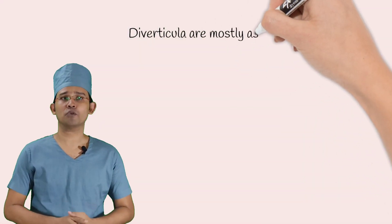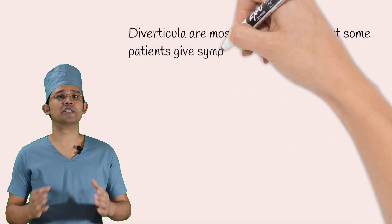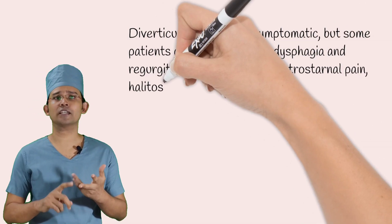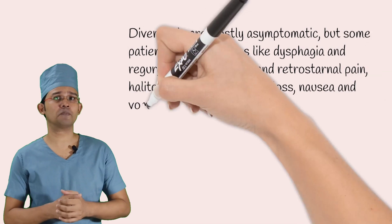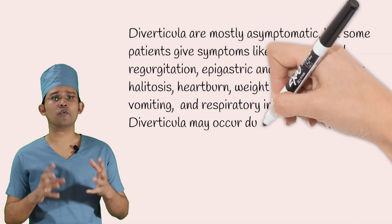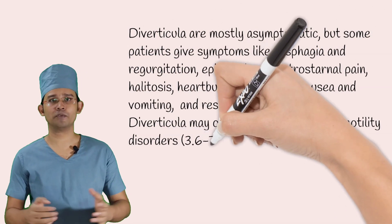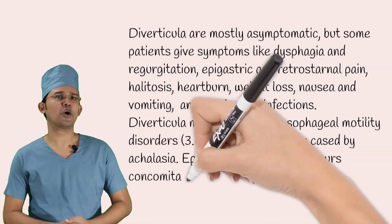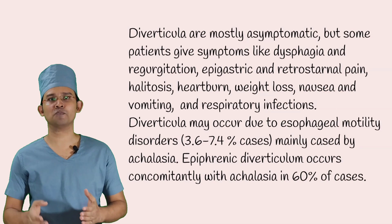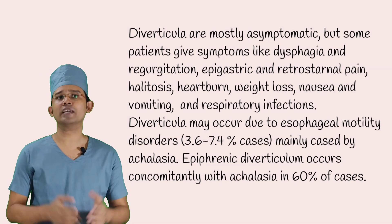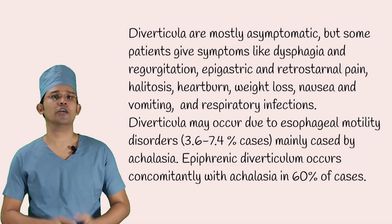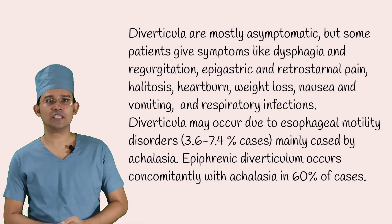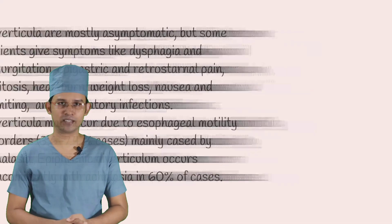Diverticula are mostly asymptomatic, but some patients have symptoms like dysphagia, regurgitation, epigastric and retrosternal pain, halitosis, heartburn, weight loss, nausea and vomiting, and also respiratory infections. Diverticula may occur due to esophageal dysmotility disorder, mainly caused by achalasia cardia. Epiphrenic diverticulum occurs commonly with achalasia in 60% of cases.